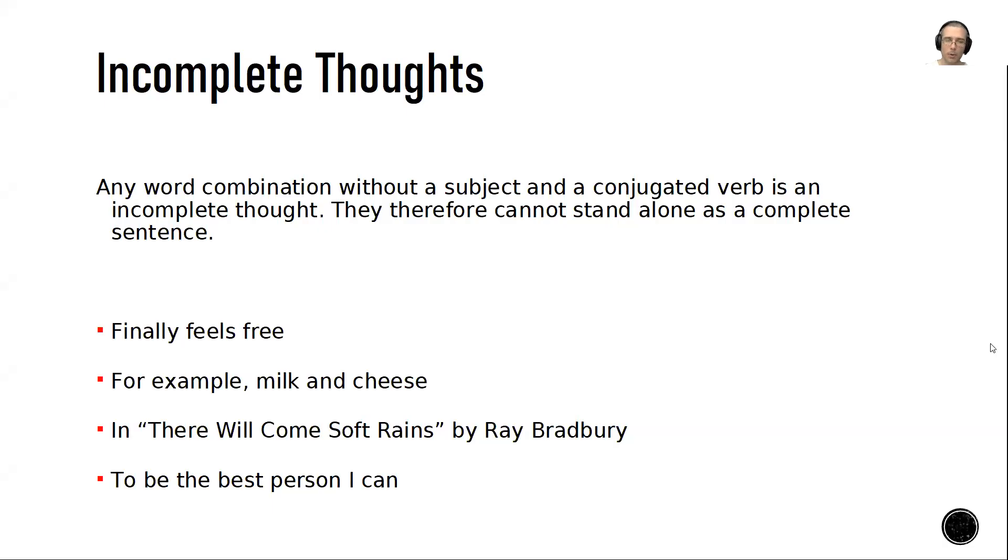Some examples of these incomplete thoughts or sentence fragments: 'Finally feels free,' 'For example, milk and cheese.' This second example is actually quite common. After you say something in your essay, you might be tempted to write 'for example,' but this actually indicates that what you have here is a dependent clause that has to be attached to the independent clause of the previous sentence, unless it also has a subject. You could say, 'For example, milk and cheese are dairy products.'